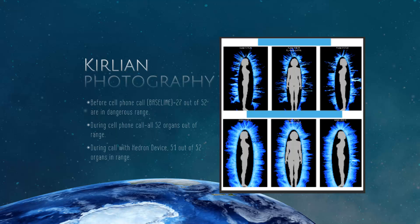51 out of 52 organs are now in range. So what does this tell us? This tells us the person was better off with the cell phone and the harmonizer on the cell phone than no cell phone at all. So how can this be? How does this affect our body?